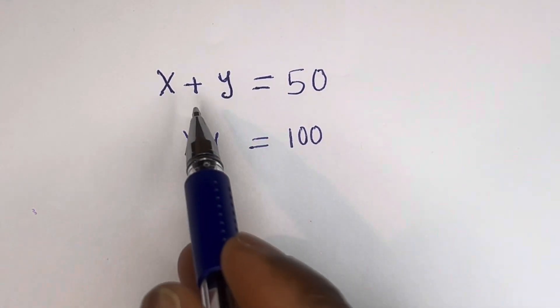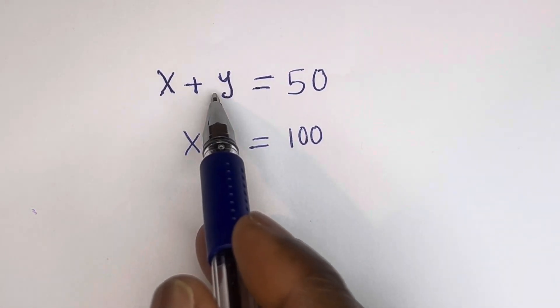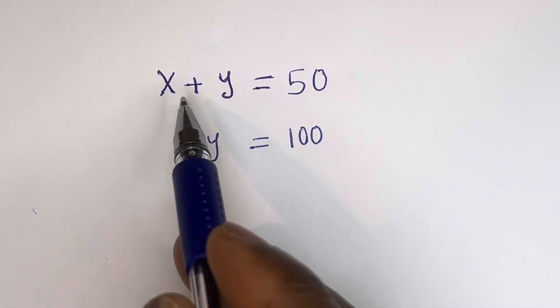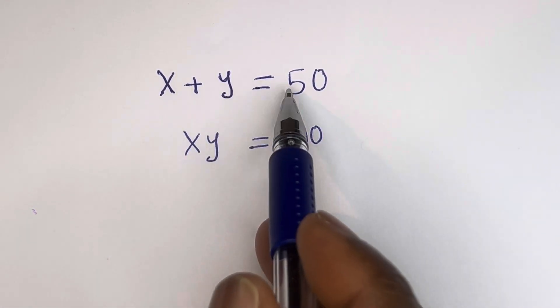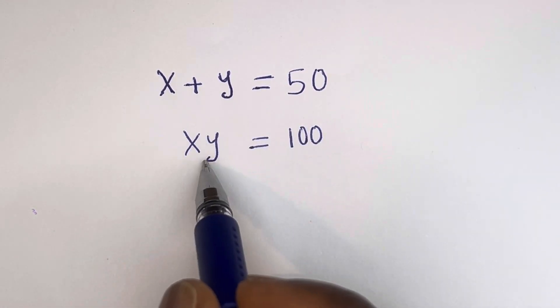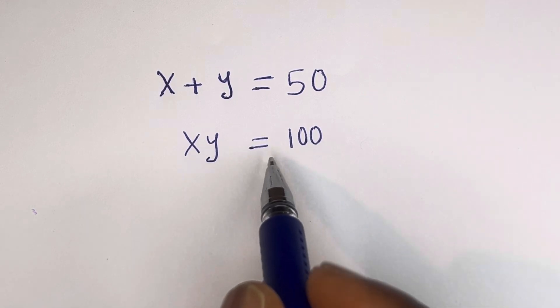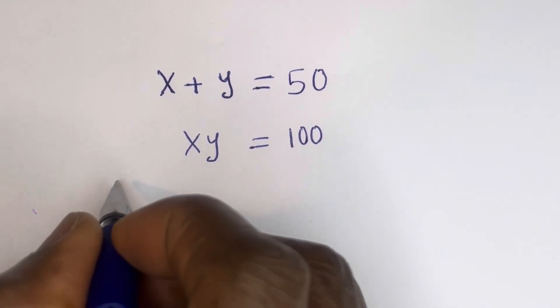Hello. How to solve for x and y in this equation: x plus y is equal to 50, and x times y is equal to 100. Solution.